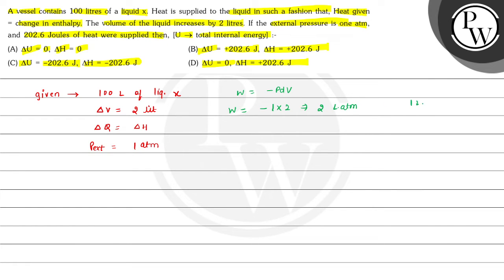Converting this value into joules: 1 liter·atm = 101.3 joules. So W = 2 × 101.3 = 202.6 joules. This value comes out to be negative, so W = −202.6 joules.